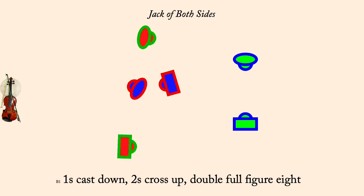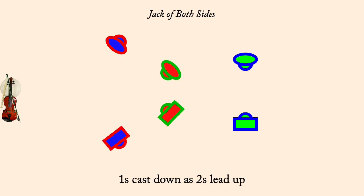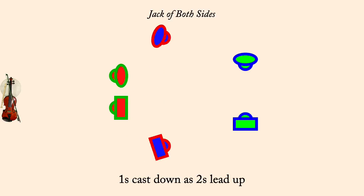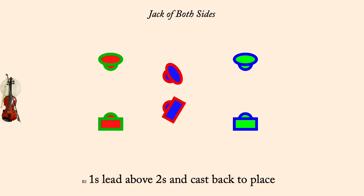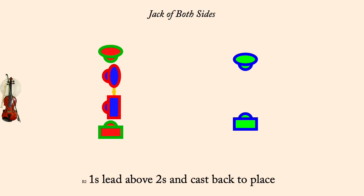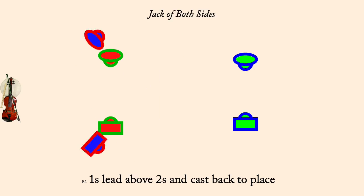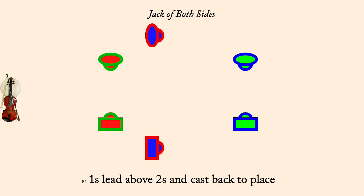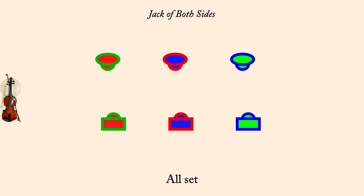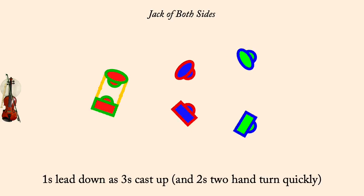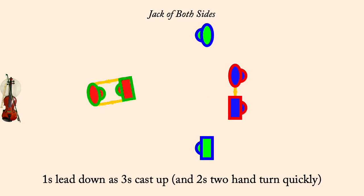Ones cast down as twos lead up. Ones lead above twos and cast back to place. All set. Ones lead down as threes cast up. Ones lead up. Thank you.